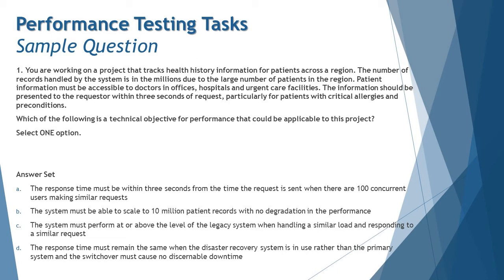Option C: the system must perform at or above the level of the legacy system when handling a similar load or responding to a similar request. That may not be correct because this is also a user-based objective and not a very clear one. The legacy system is not clearly defined — what performance configurations or aspects does it have? Without accuracy and precision on that information, it cannot be called a technical objective for performance testing.